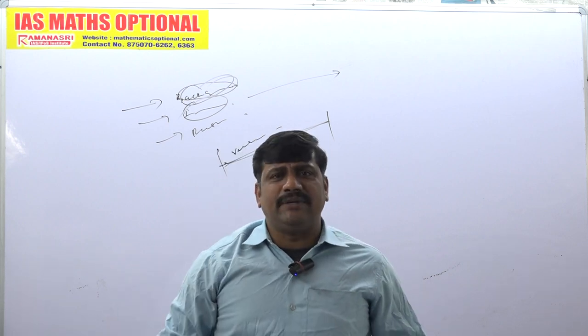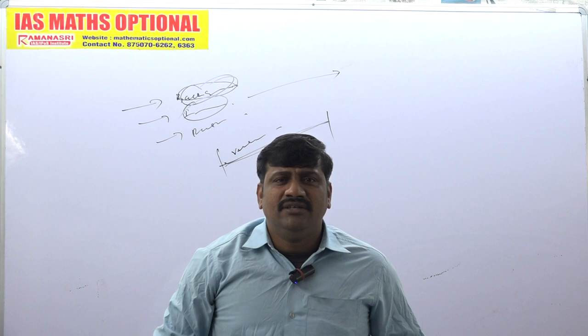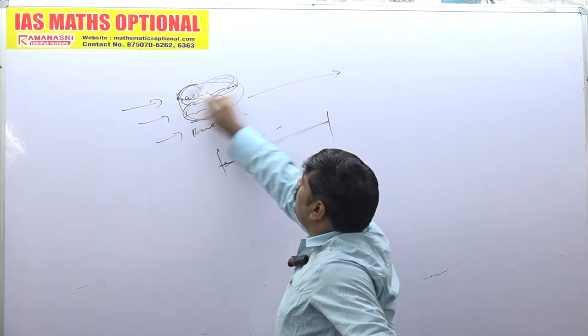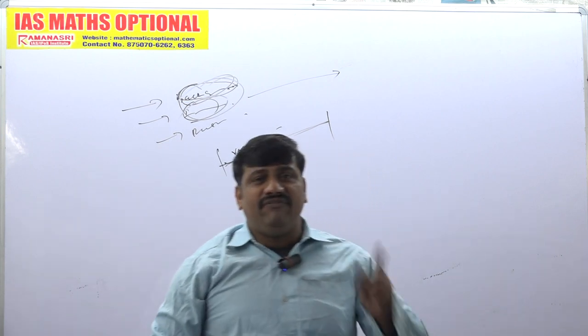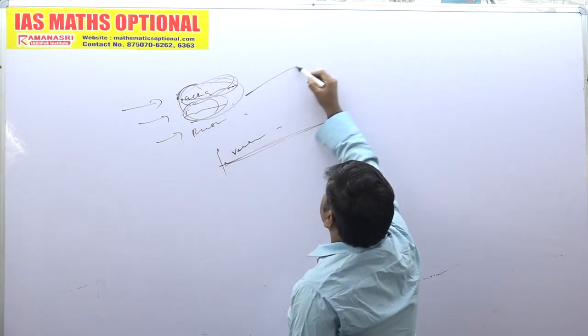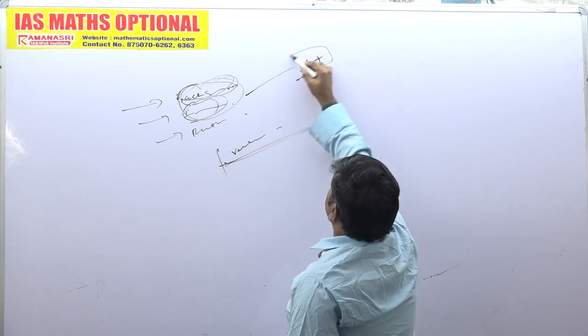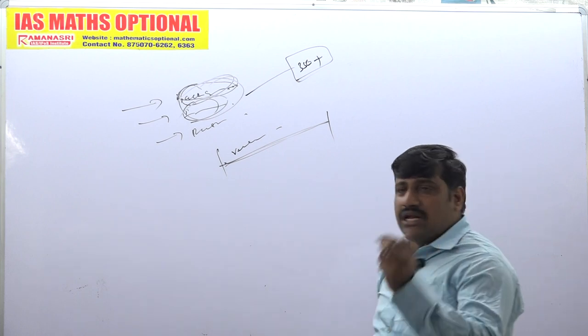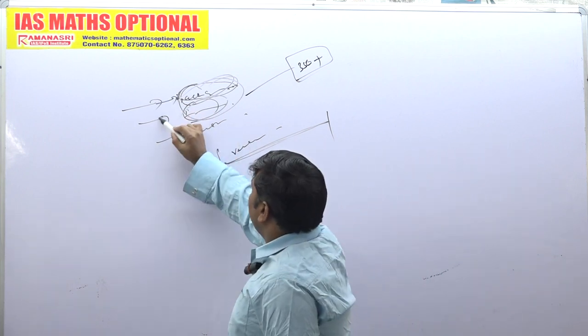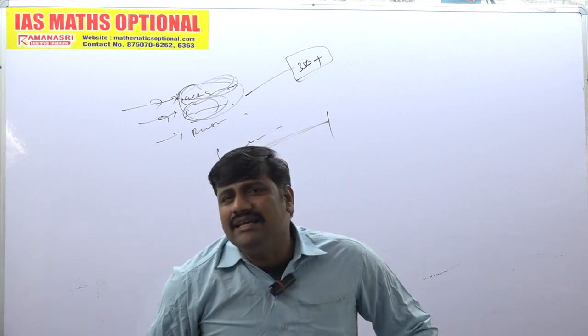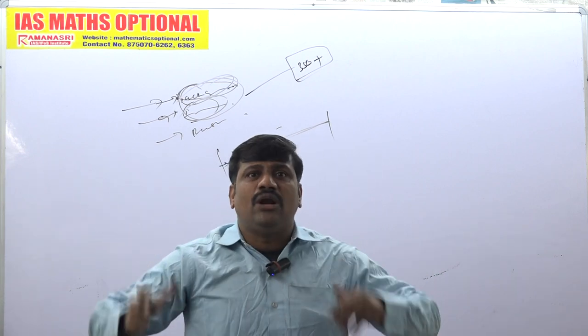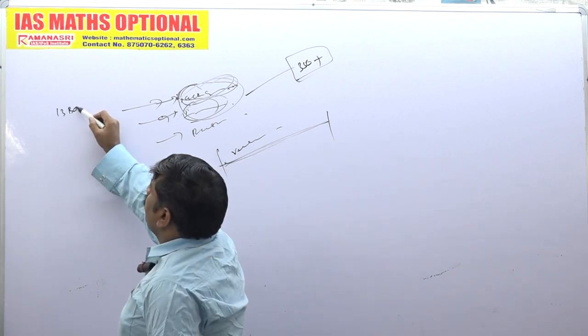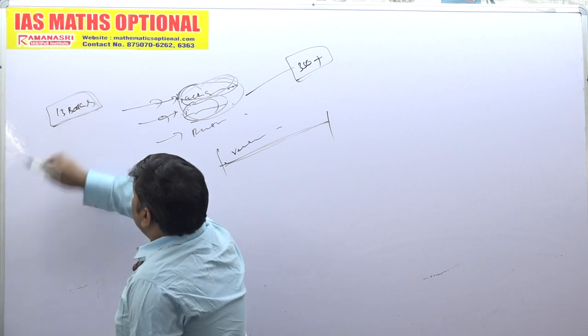Both combinations will work, will fetch our dream score. Dream scores, 350 plus marks. Therefore you can choose maths as optional if you have background and you have interest. Interest is nothing about, you know, I need to study a lot of books. No, hardly we are studying 13, that's it.